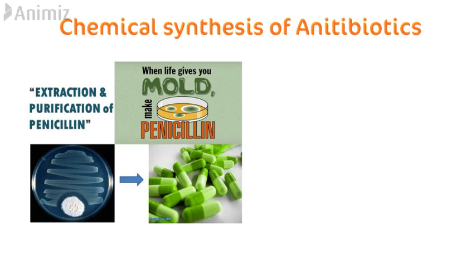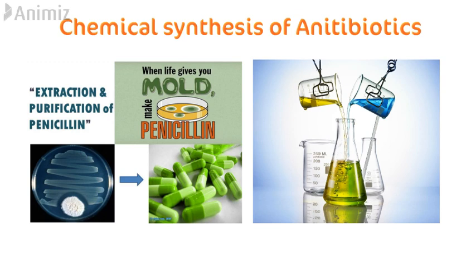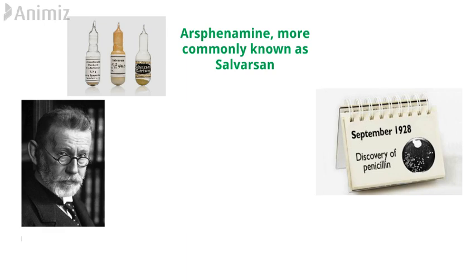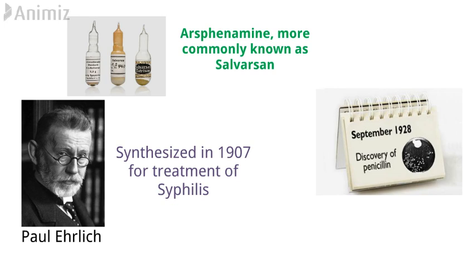But now, with recent advancements in structural elucidation techniques and industrialization, antibiotics are chemically synthesized in labs. Even before the discovery of penicillin in 1928, which was commercially available until the 1940s, there was a drug Arsphenamine — more commonly known as Salvarsan — which was chemically synthesized by Paul Ehrlich. It was synthesized in 1907 for the treatment of syphilis and was the first chemically synthesized antimicrobial agent.